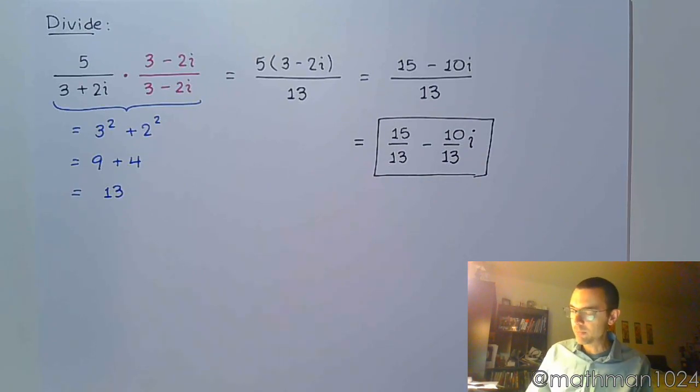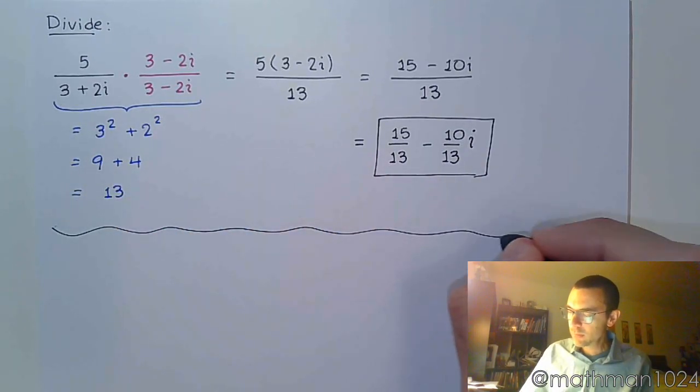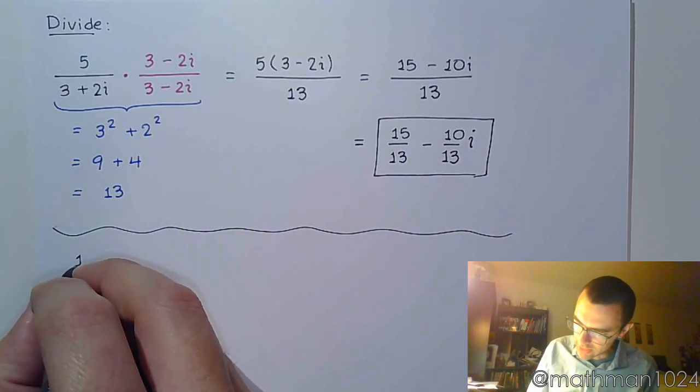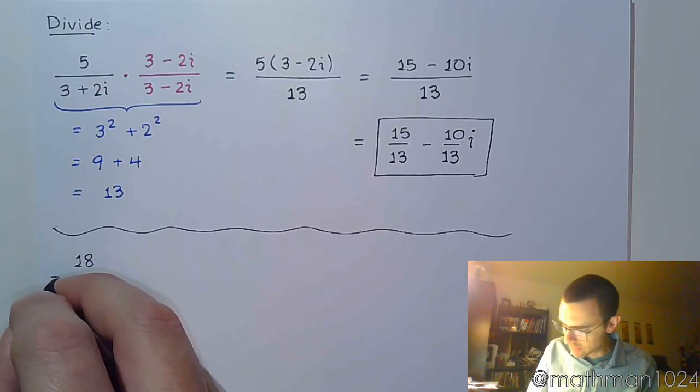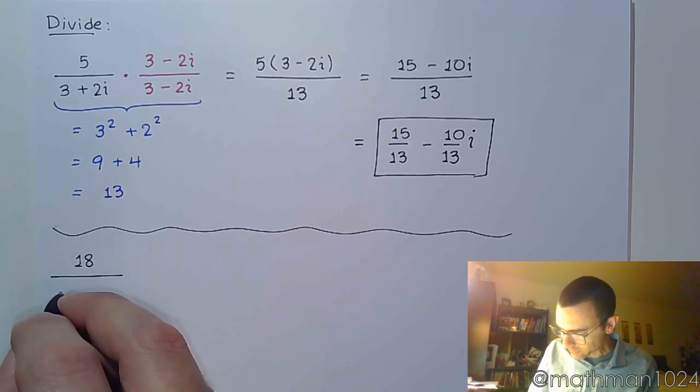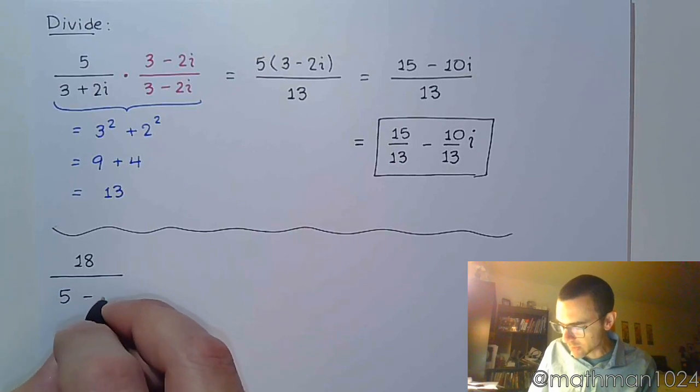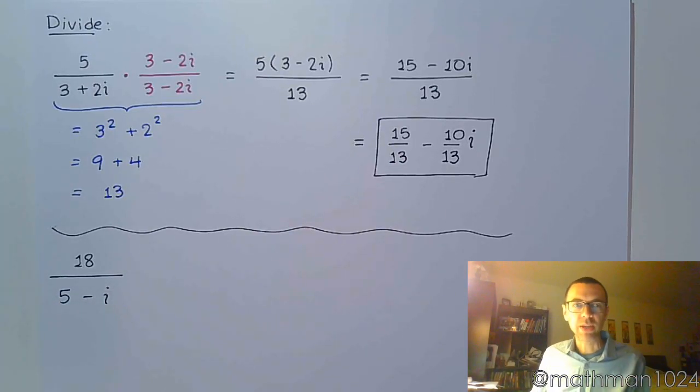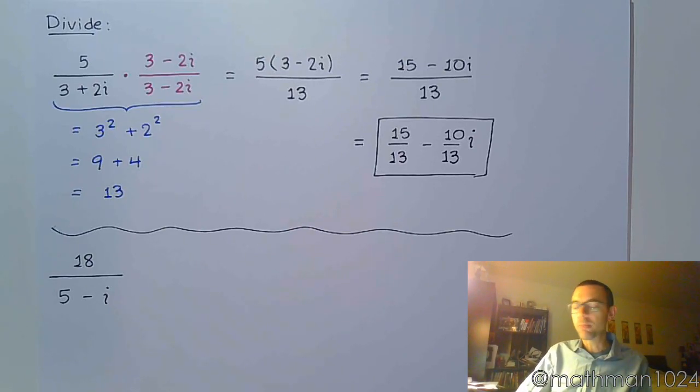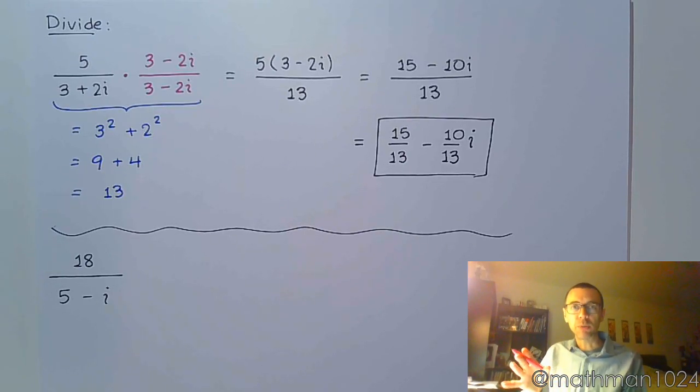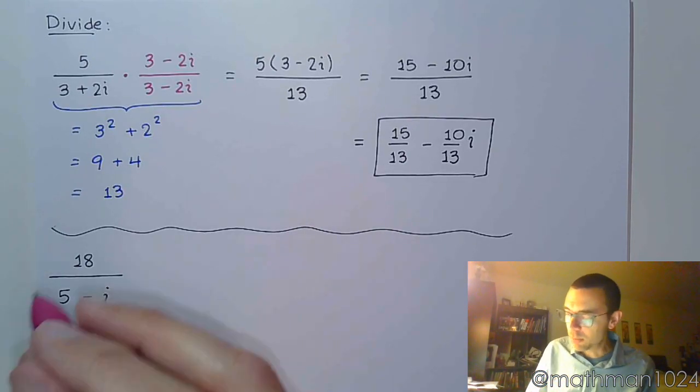Let's try this again. Let's try 18 divided by 5 minus i. Just like this last problem, we should go ahead and start by multiplying times the complex conjugate of that denominator. I'm not worried so much about the 18. He's not the problem.